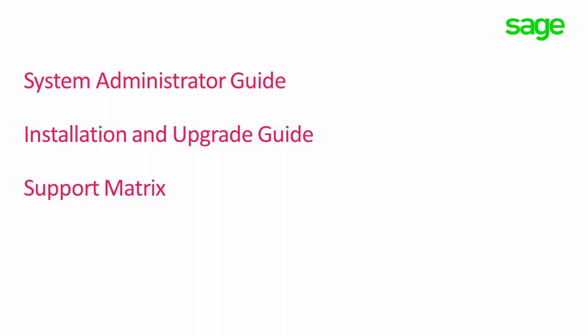But the best way to start anything is to begin at the beginning. The first thing you need to do is to gather together all the information that you will need, and to make sure that you have access to the latest documentation and help resources. The main guides that you will need are the system administrator guide, the installation and upgrade guide, and the support matrix.